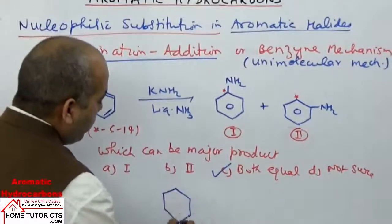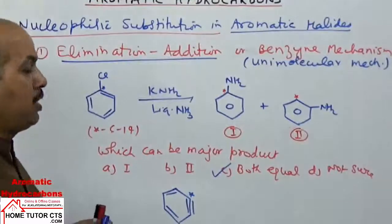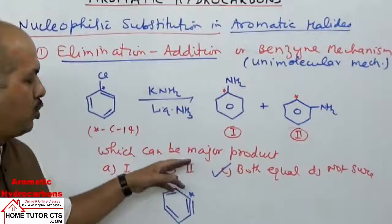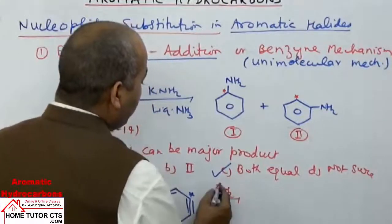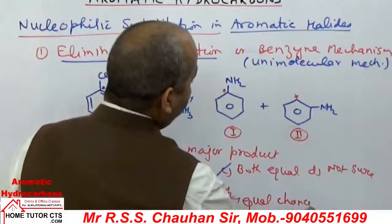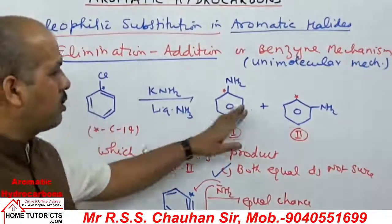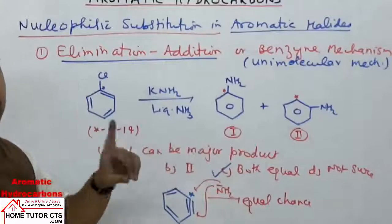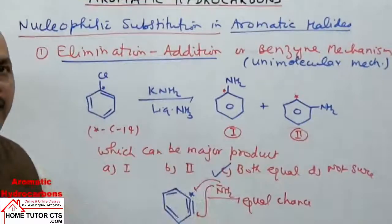The reason is: when the benzyne intermediate forms, without any additional substituents, both carbons of the extra pi-bond are equivalent with equal steric hindrance. So the NH2 negative ion has equal probability of attacking either carbon position, giving products 1 and 2 in almost equal amounts. Therefore, in plain chlorobenzene with a single Cl, both products are obtained in equal amounts.